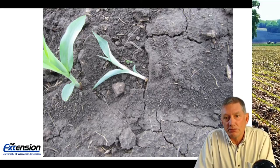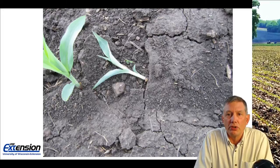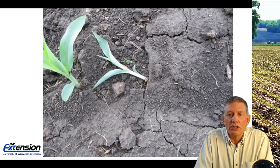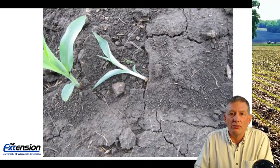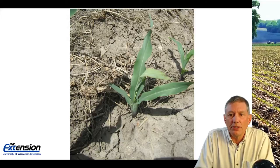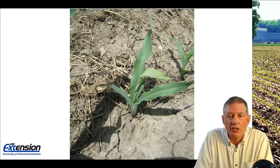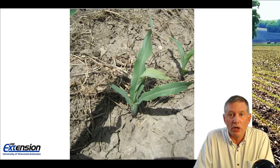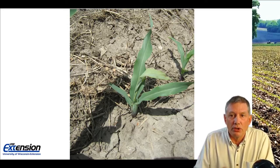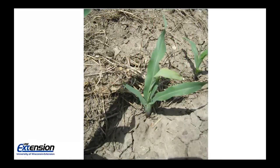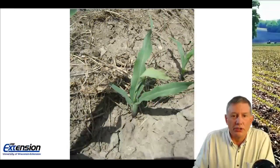Larger larvae on small plants — V1, V2, maybe even V3 corn — will cut that plant off at ground level. And larger larvae on V3 to V4 corn will burrow into that corn plant below ground level and feed at the growing point. Here's a good shot of what I'm calling the wilted whorl or dead heart — the newest leaves emerging from the whorl are wilted. That's a sign of black cutworm feeding, but other early insects can cause that same type of symptoms.